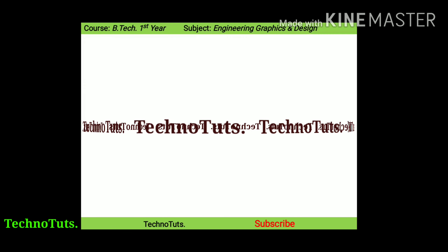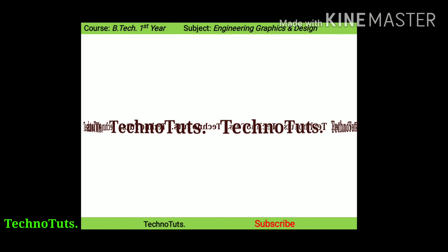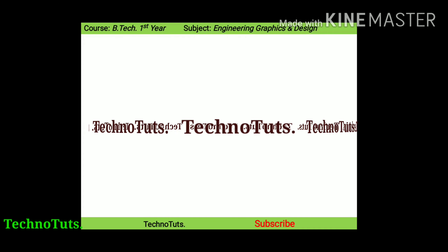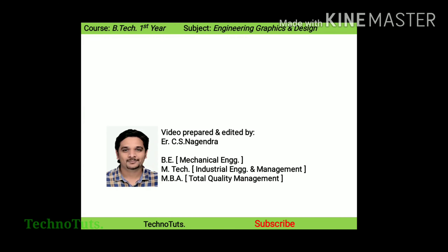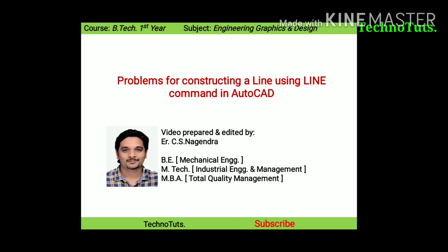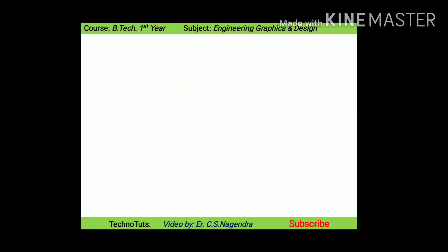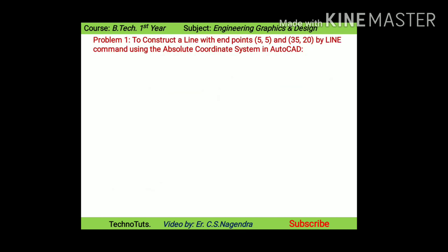Hello friends, welcome to Technotrad's YouTube channel. I am your host, engineer CS Nagendra. Today's topic is problems for constructing a line using the line command in AutoCAD. In this video, I am taking base types of problems of line command. Let us see problem number one: to construct a line with endpoints five comma five and thirty-five comma twenty.